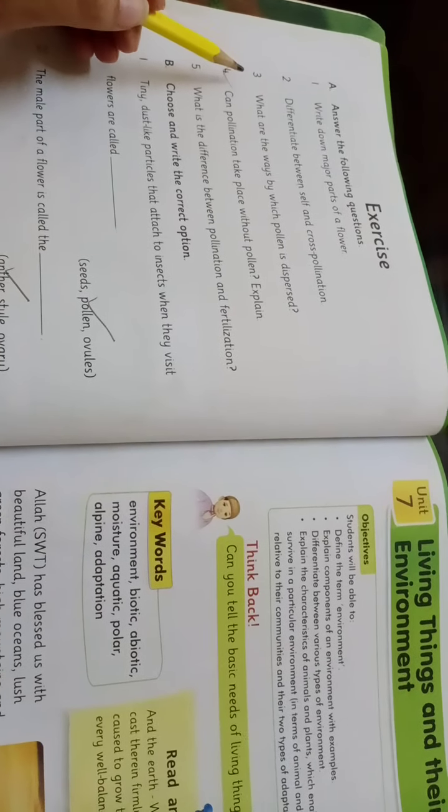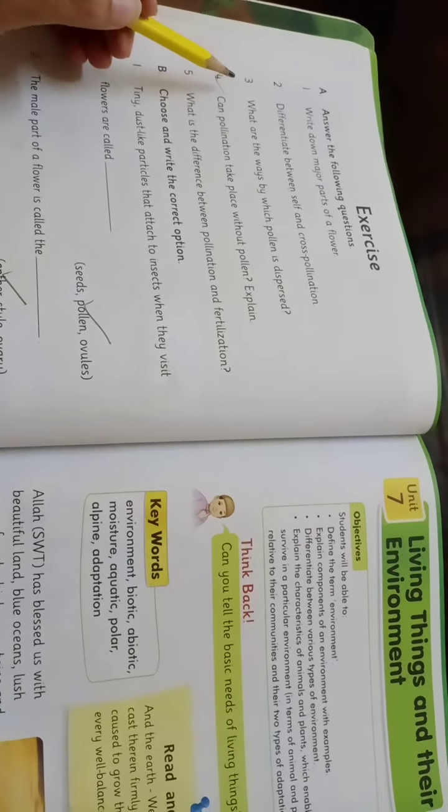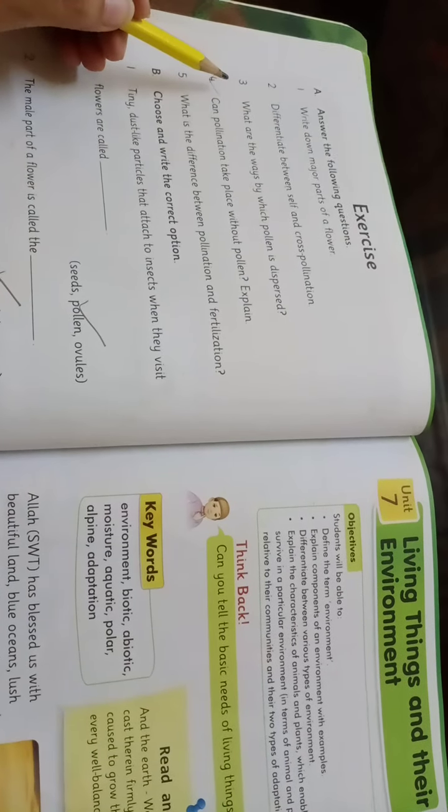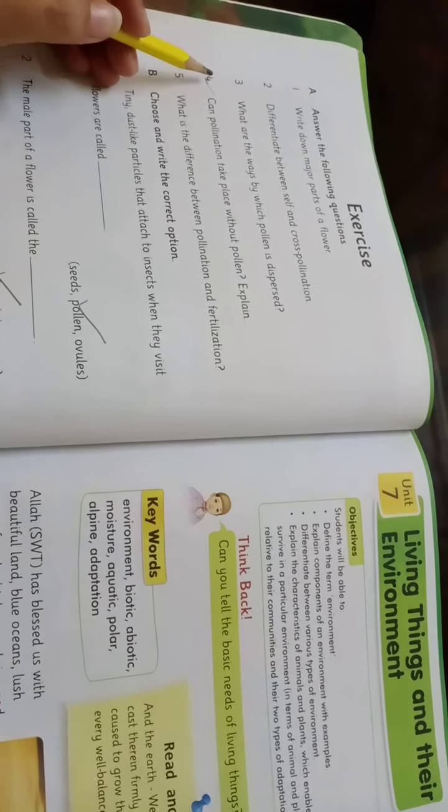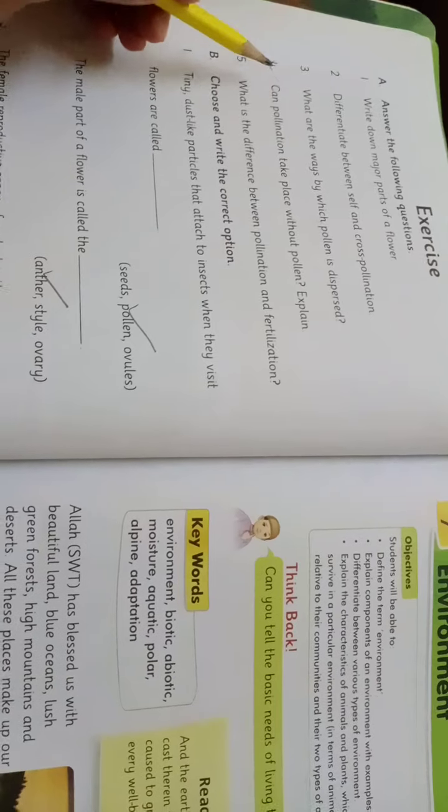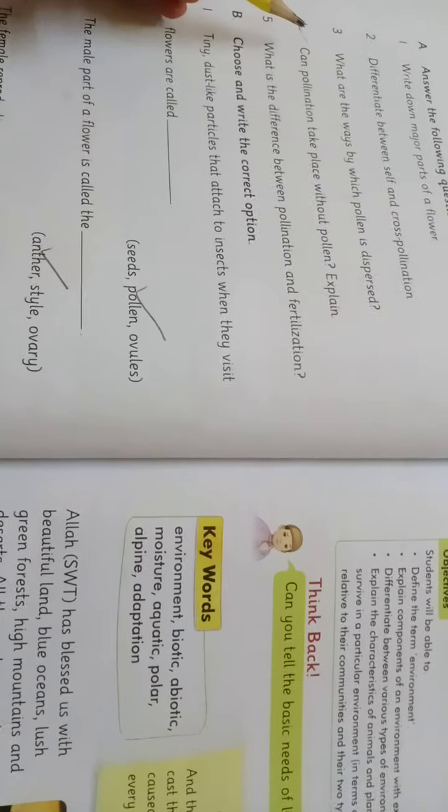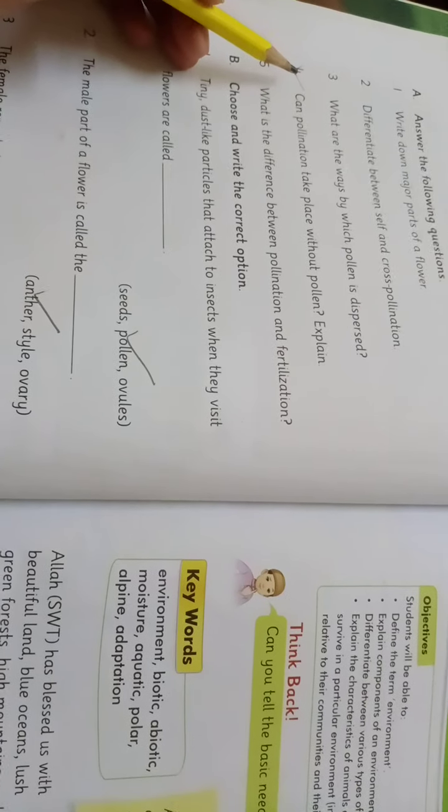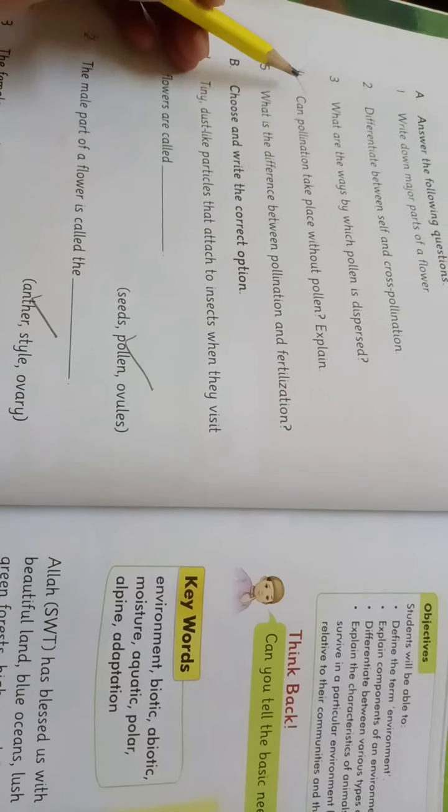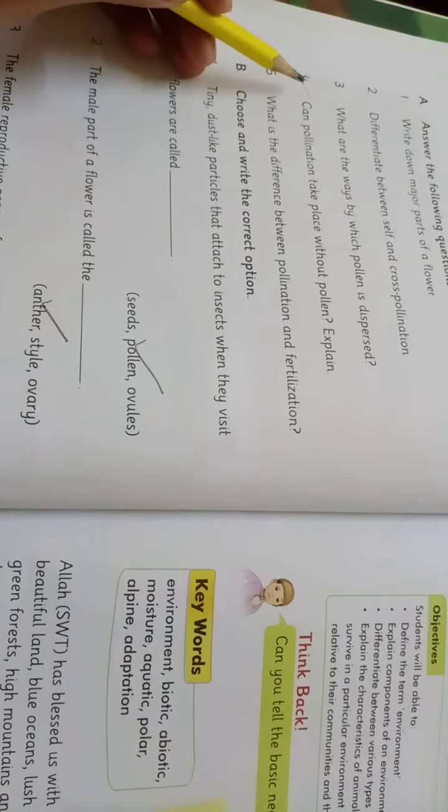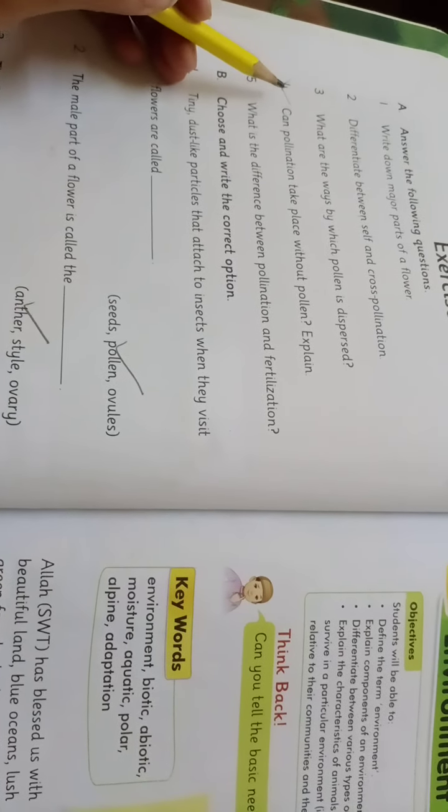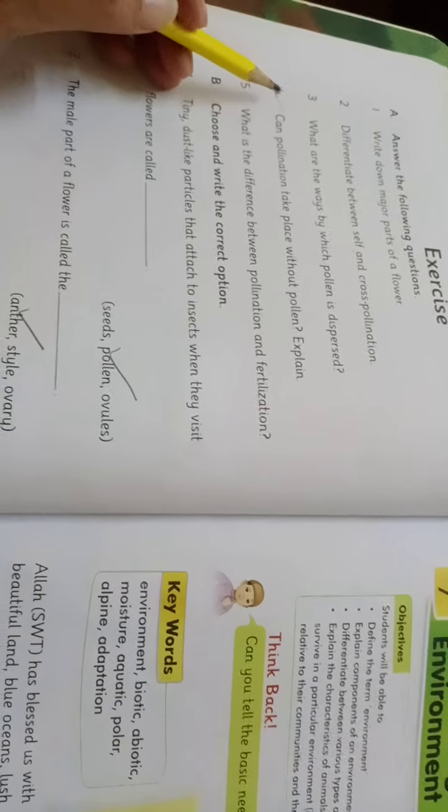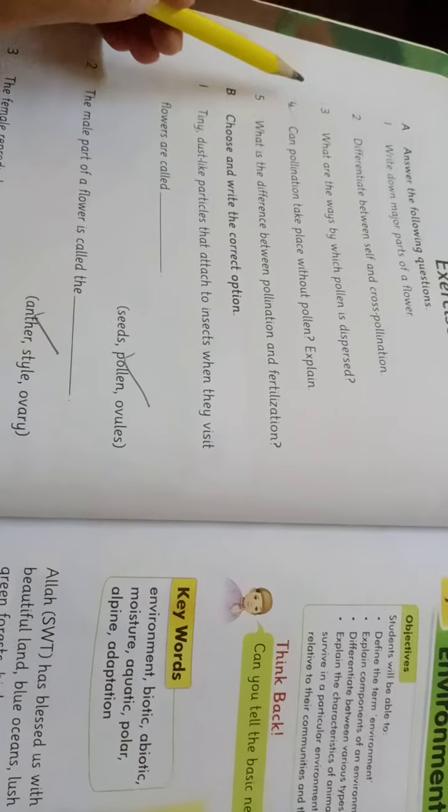So the next is pollination by wind. Some flowers do not have nectar or a strong scent so they are unable to attract insects. In such flowers pollination is done by wind. Kya hota hai ke kuch flowers ke paas zada strong khushbu nahi hoti hai, nectar nahi hota hai jo ki sweet liquid hai. To isse wajah se jo pollination hai wo kis tarah se done hoti hai? Through wind.